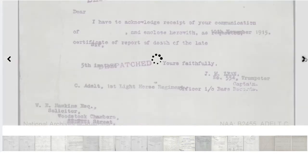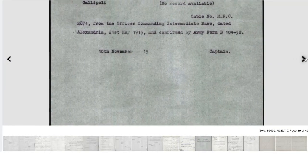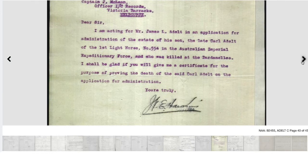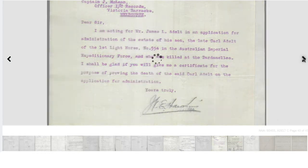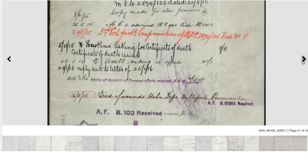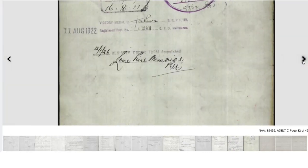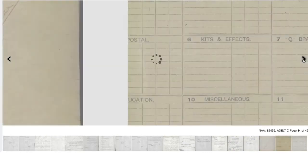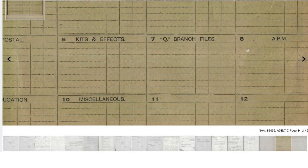There is just some additional administrative information in Carl's record about his war service, his death, and his possessions. This is quite an extensive record — a lot of soldier records you'll find won't have this much information in them, but Carl's is quite long.